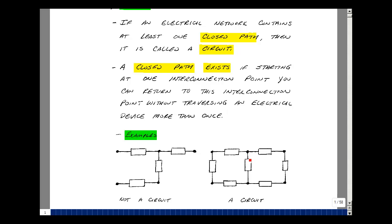This is what's called a circuit. Here's an example of something that's not a circuit. If I were to start at this electrical connection point, I can't come back to it without going through, in this case, these two elements twice. So these are both electrical networks, but this is not a circuit, and this one is a circuit.